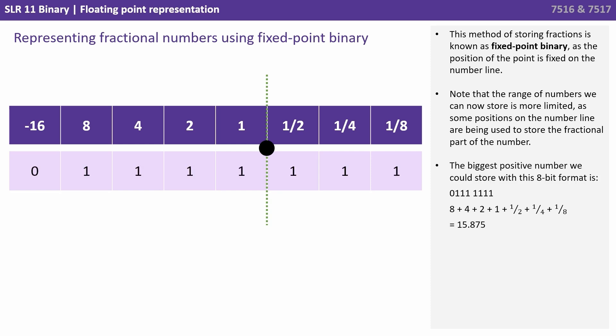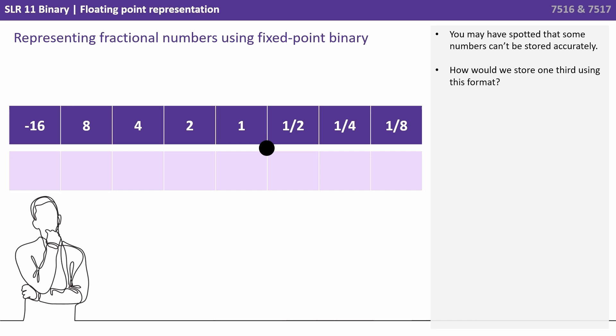The biggest positive number we could store with this 8-bit format is 0111111, and 8 4 2 and a 1 plus a half a quarter and an 8, or 15.875. Now you may have spotted that some numbers can't be stored accurately. How, for example, would we store one third using this format?